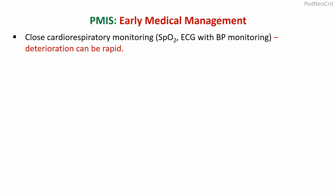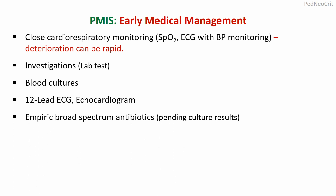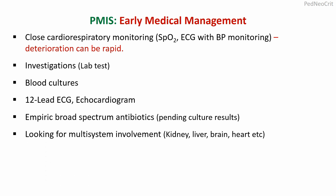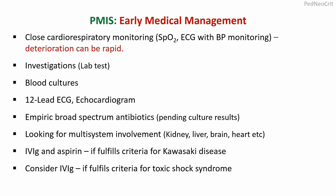Early medical management includes close cardiorespiratory monitoring — saturation, ECG, and blood pressure monitoring — because deterioration can be rapid. Investigations include routine lab tests, blood cultures, 12-lead ECG and echocardiogram, empiric broad-spectrum antibiotic pending blood cultures, and modification of antibiotics after getting culture reports. Look for multi-system involvement including kidney, liver, brain, and heart. IVIG and aspirin if Kawasaki disease criteria are fulfilled, and IVIG if toxic shock syndrome criteria are fulfilled. A few patients may need volume resuscitation and inotropic support.